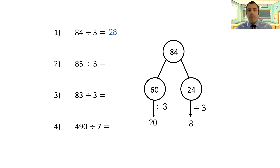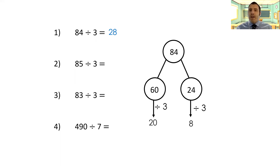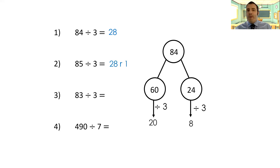Question two: 85 divided by three. We've kind of answered this already, because 85 is one more than 84. And we know three divides exactly into 84. So if I've got one more, I know that one can't be divided by three, so I'm going to have a remainder. My answer is going to be 28 remainder one.